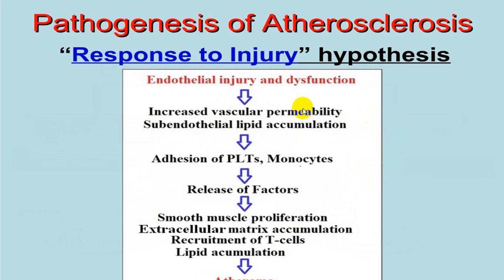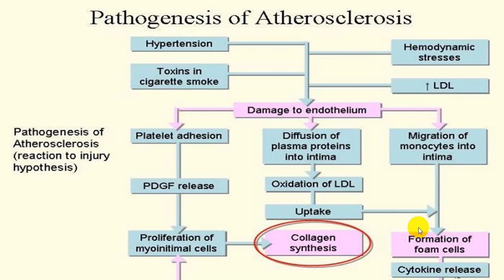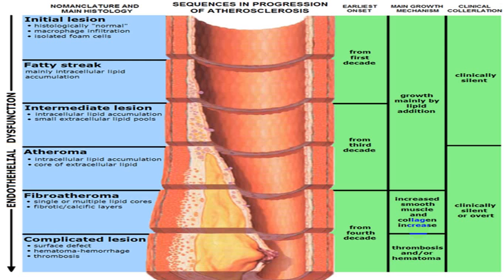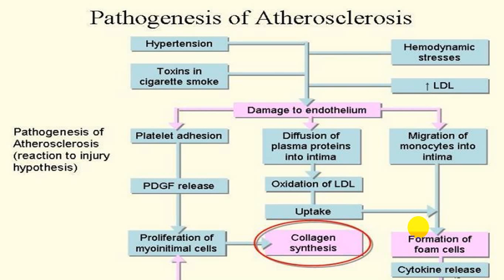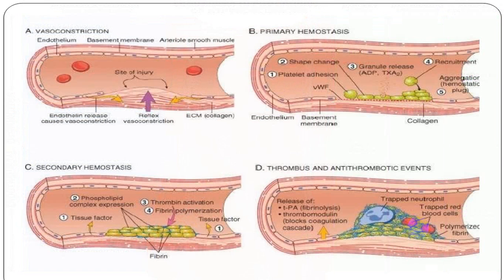In atherosclerosis, endothelial injury causes increased vascular permeability, platelet activation, release of factors, T-cell accumulation, and atheroma formation. Once an atheroma forms, it causes further endothelial damage, attracting and attaching platelets to the exposed collagen tissue. After vessel injury: first vasoconstriction occurs, then platelet attraction to the damaged area, platelet release of platelet factors, formation of a secondary platelet plug, and then thrombus formation through activation of the coagulation cascade.